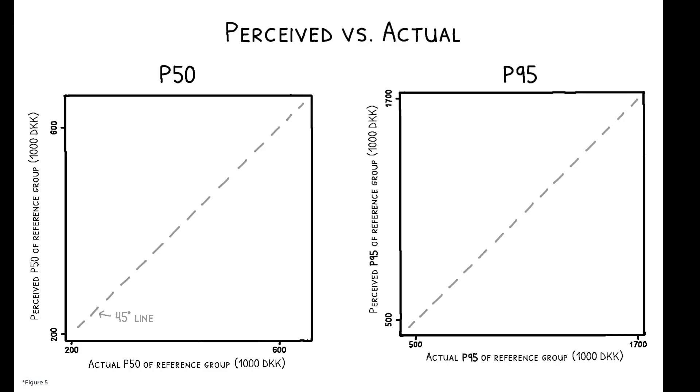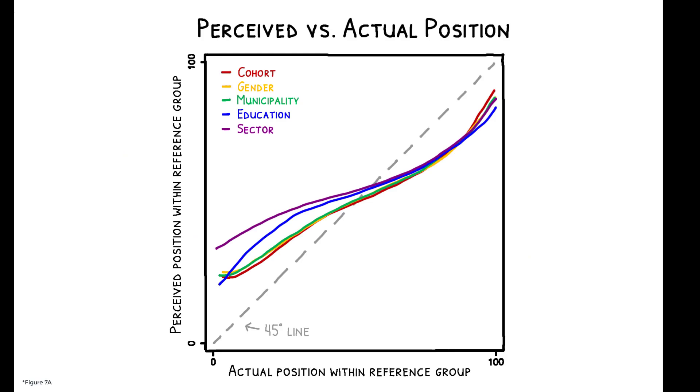Now, center bias is a consistent pattern, but misperceptions are also larger in some reference groups than in others. While perceptions of P50 are reasonably accurate across all groups, respondents systematically underestimate the P95 income levels in their education and sector groups. These are also the groups where misperceptions of own position are largest amongst those lower in the distribution.